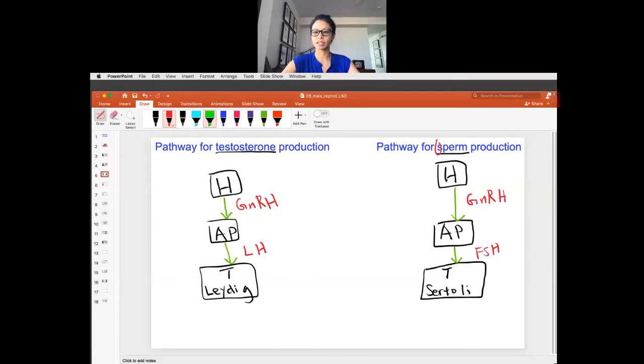So one way to remember is sperm and FSH. So LH binds to the receptors on the Leydig cell. LH, Leydig. Okay. So that's where the receptor is. And that binds to produce testosterone.